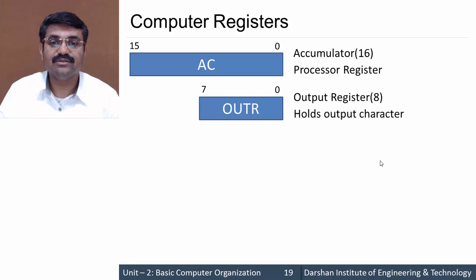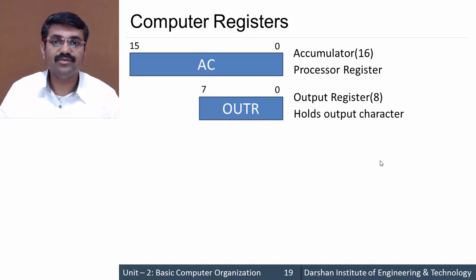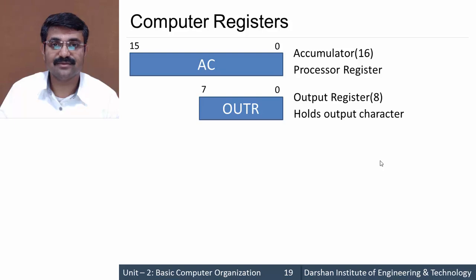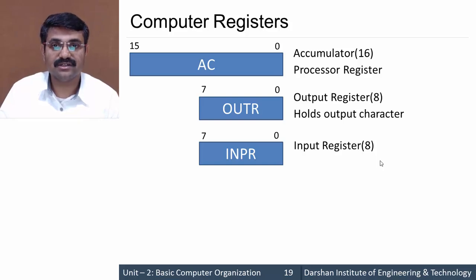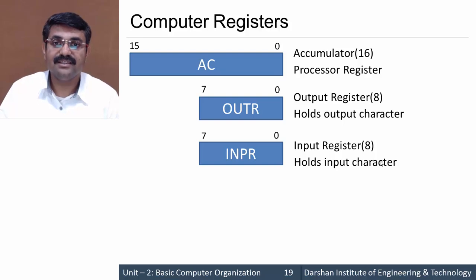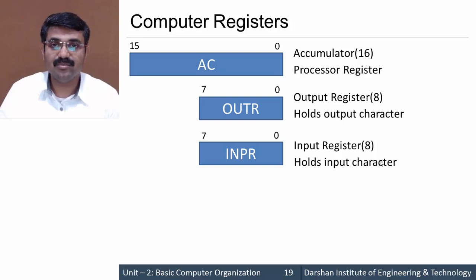Then we have OUTR — Output Register — which is of size 8 bits. This holds the output character, meaning the character we want to send to our output device would be stored in this OUTR register. Next we have INPR — Input Register — which is also of size 8 bits. This holds the input character — the data given from the input device would be stored in INPR.